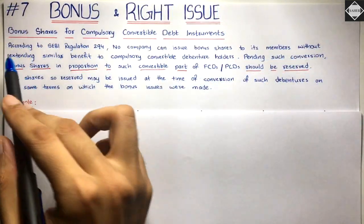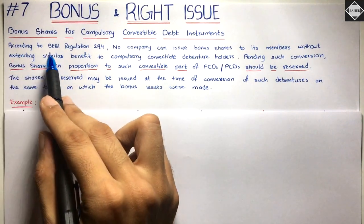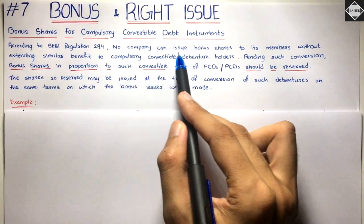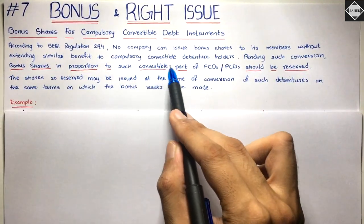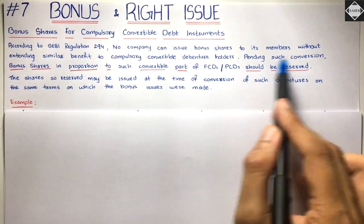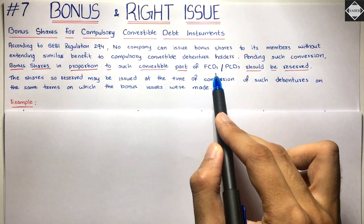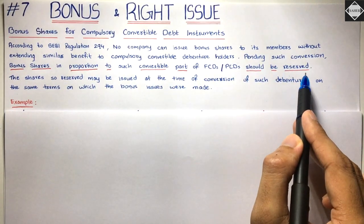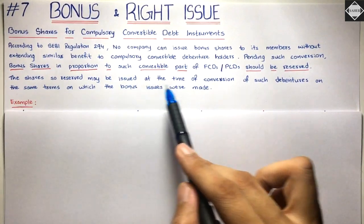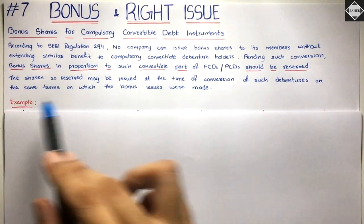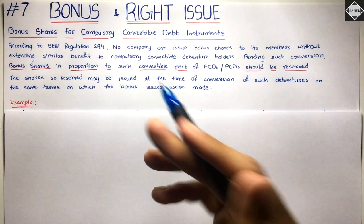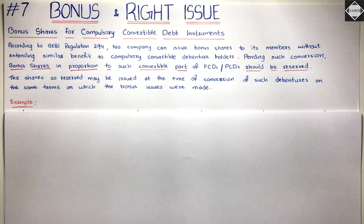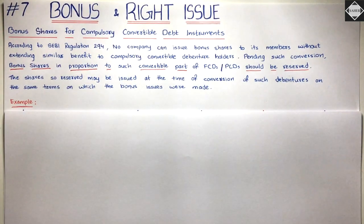Let's read this once and then I'll explain how simple it is. According to SEBI Regulation 294, no company can issue bonus shares to its members without extending similar benefit to compulsory convertible debenture holders. Pending such conversion, bonus shares in proportion to such convertible part of FCDs or PCDs should be reserved. The shares so reserved may be issued at the time of conversion of such debentures on the same terms on which the bonus issues were made.